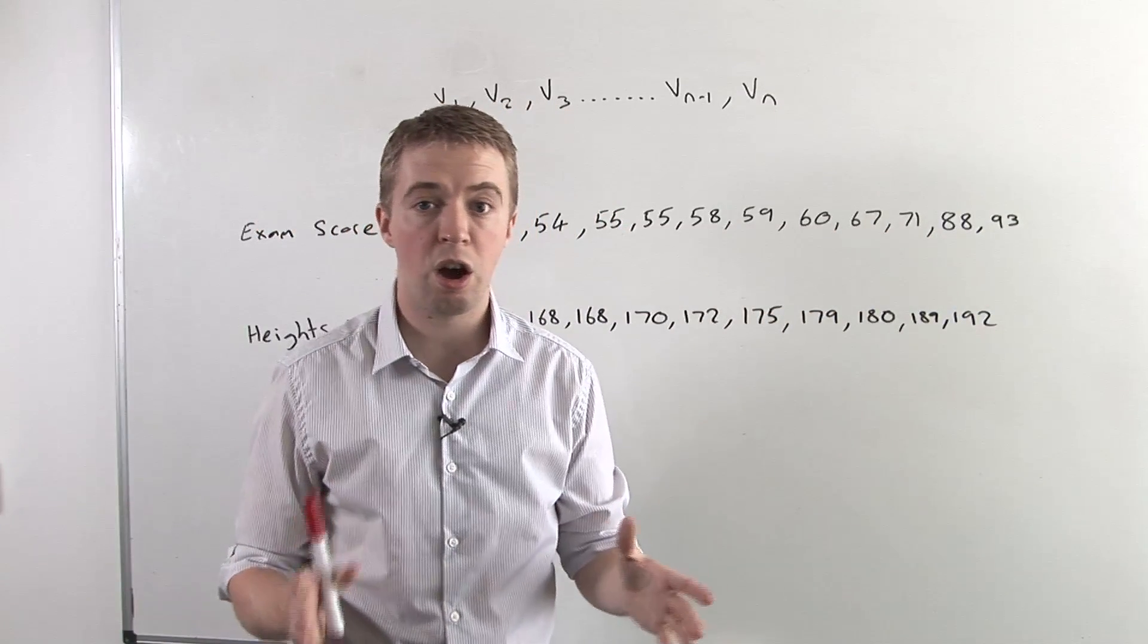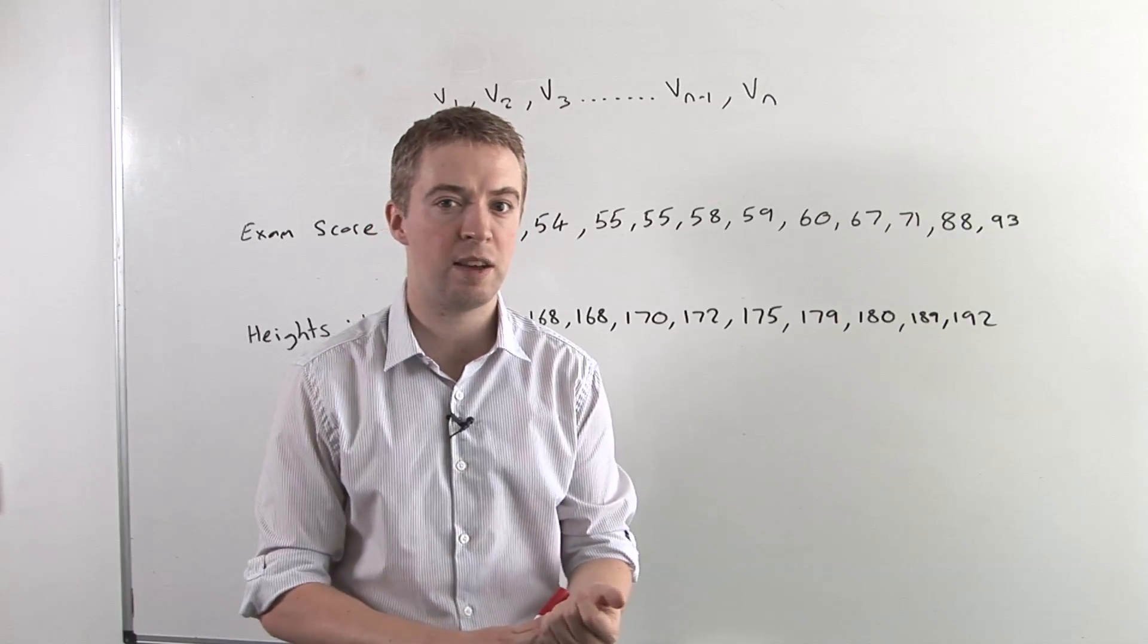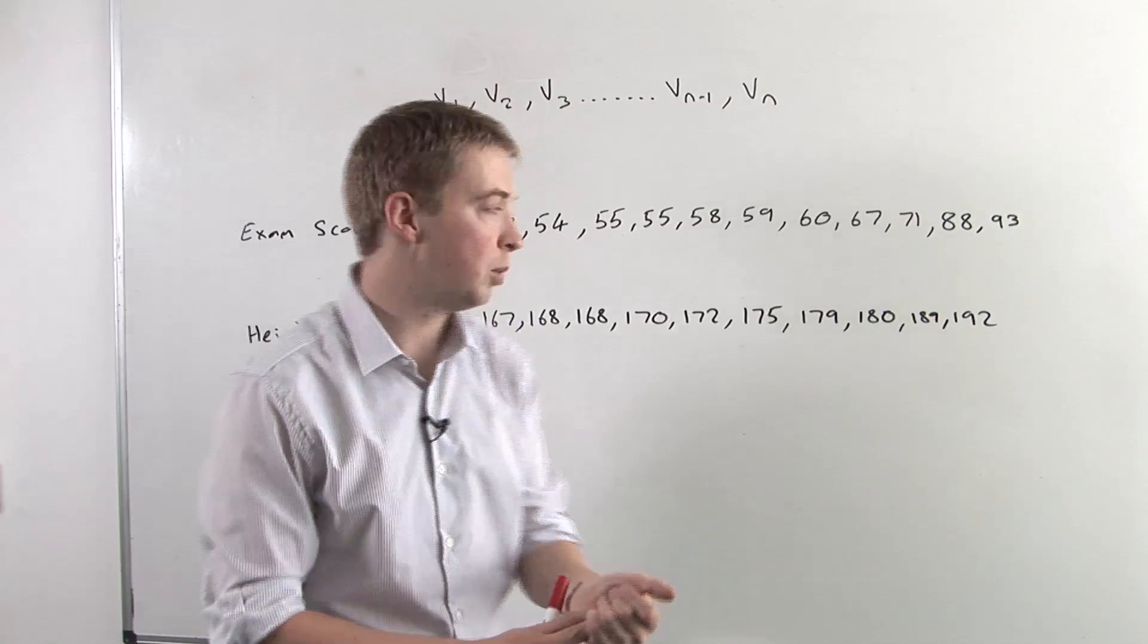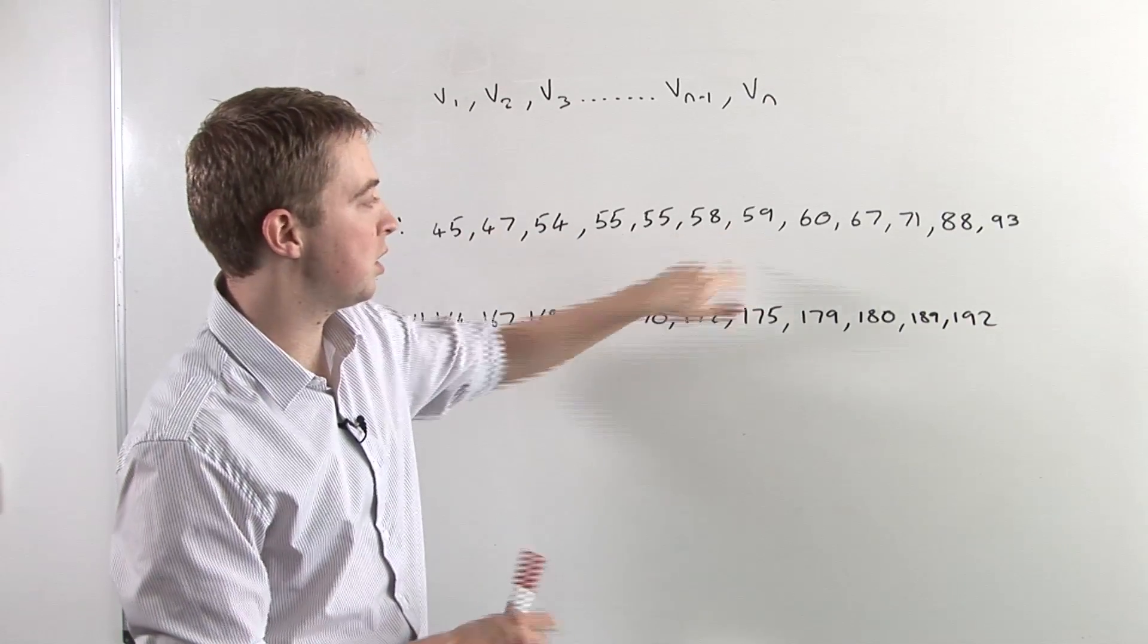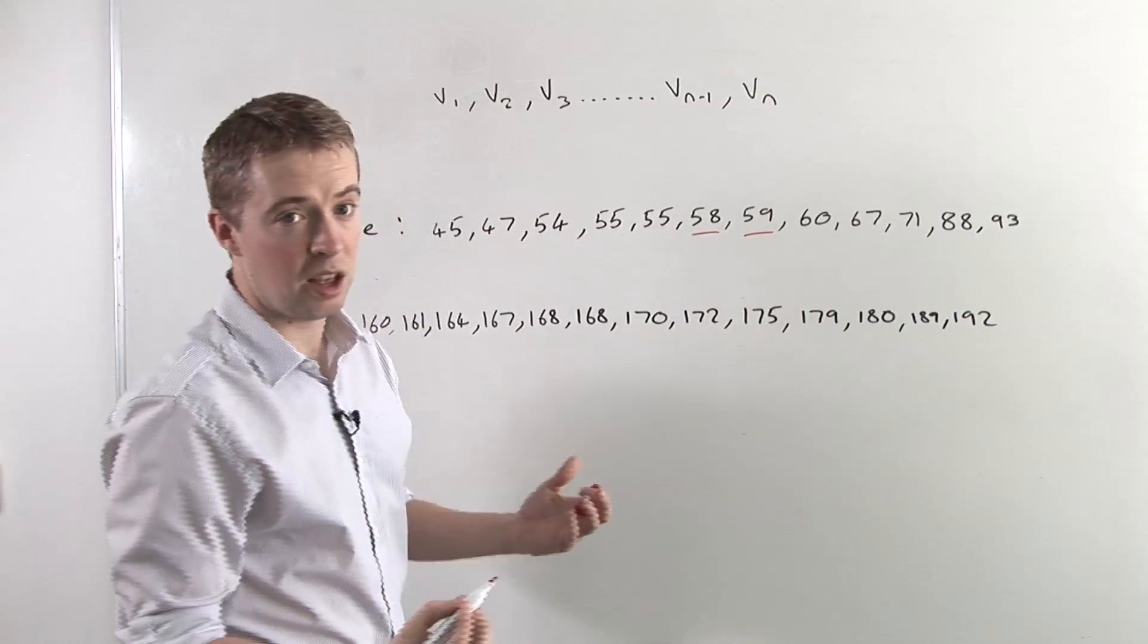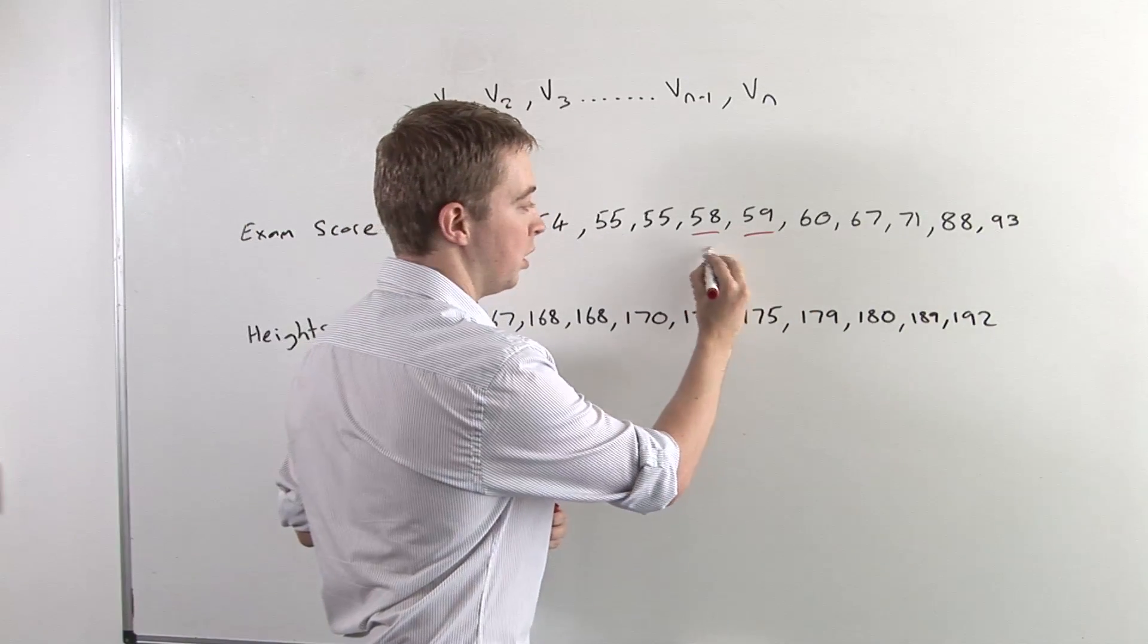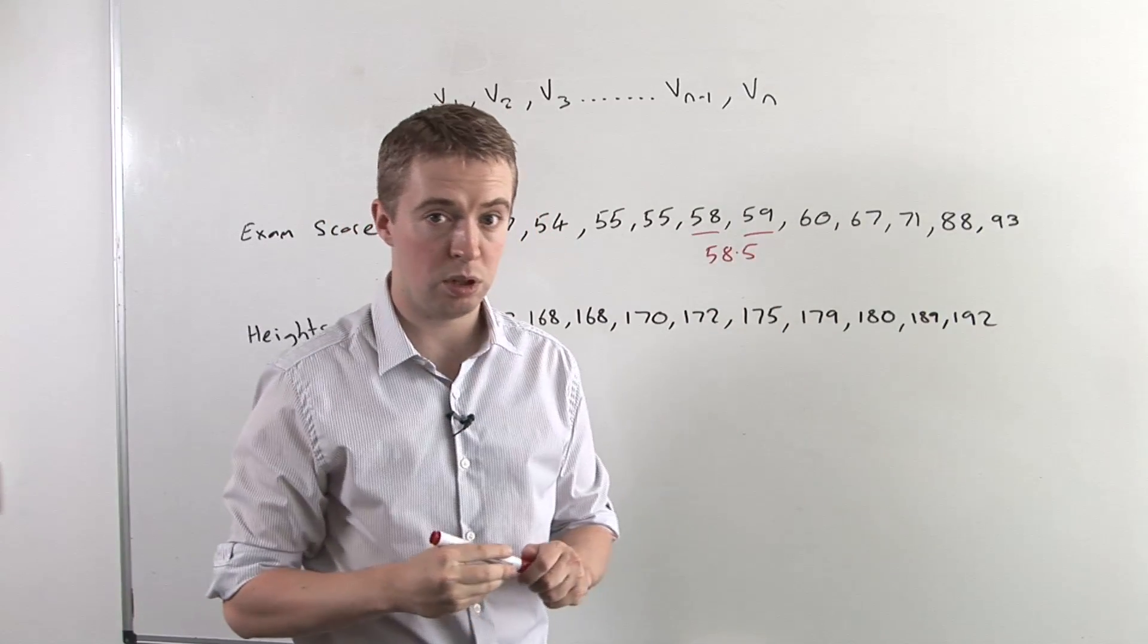Obviously, halfway between those scores is going to be the sixth and seventh marks. So if we look at that, that's 1, 2, 3, 4, 5, 6, and 7. We're looking at these two exam scores, and they tell us simply that the median is 58.5, because that's halfway between those two scores.